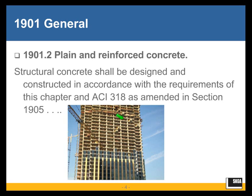In the beginning of chapter 19 on concrete, the IBC says structural concrete shall be designed and constructed in accordance with the requirements of this chapter — chapter 19 of the code — and ACI 318 as amended in section 1905. So the important thing is that it is not only the design of concrete but also the construction of concrete structures that is governed by ACI 318. ACI 318 does not have a date associated with it — nowhere in the code do dates appear with reference standards.